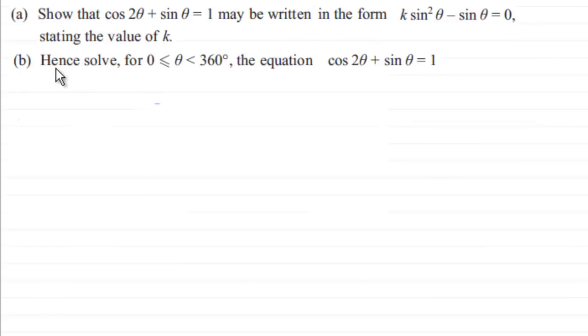In part B we've got to then go on and solve for θ being greater than or equal to 0 degrees but less than 360 degrees the equation cos 2θ + sin θ = 1. So if you'd like to have a go at this, give you a moment just to pause the video.